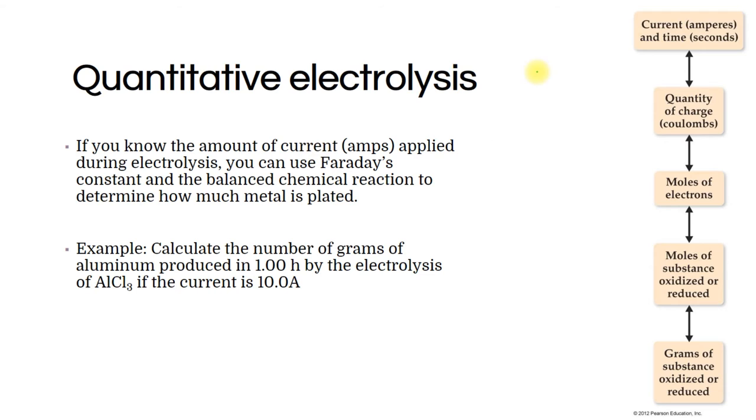So this figure from your book summarizes all the different conversions that we can do. Here's an example. If I know, I want to know how many grams of aluminum there are, I'm doing electrolysis of AlCl3. So that means I'm taking ion and I'm going to produce aluminum by adding three electrons to it. So I'm ignoring the chlorine because I just know that chlorine doesn't do anything. It's just a counter ion. So Al3+, I add electrons, so that's gaining electrons which means that's a reduction. These electrons are going to come from the wall. I'm plugging it in. So we have a current of 10 amps.